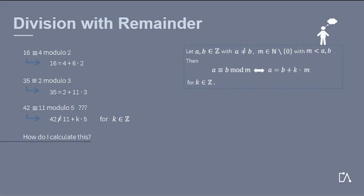But how do I calculate this? And in particular with larger numbers? Let's look again at example 2. We have to find out what 35 is equal to modulo 3. For this, we divide 35 by 3, which gives us 11 with a remainder of 2.